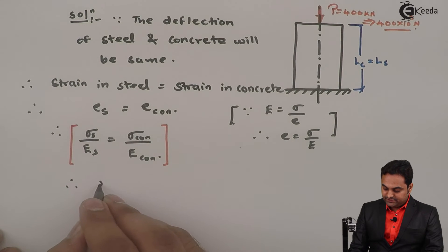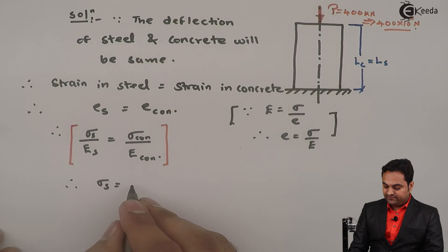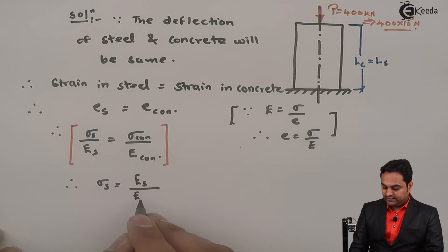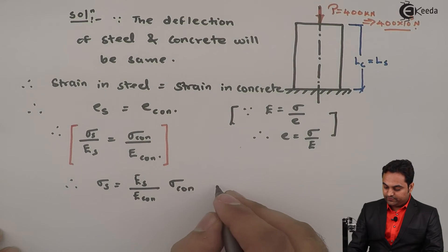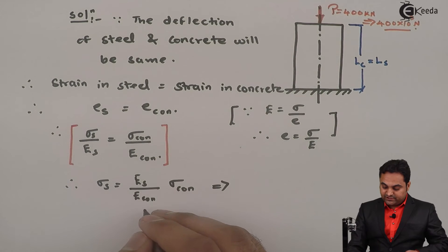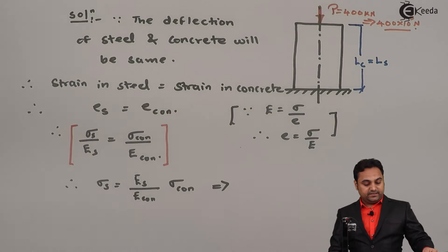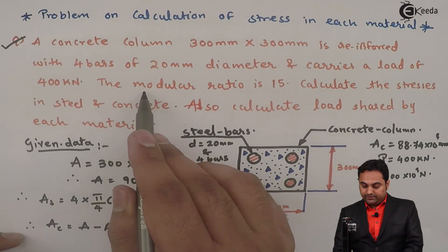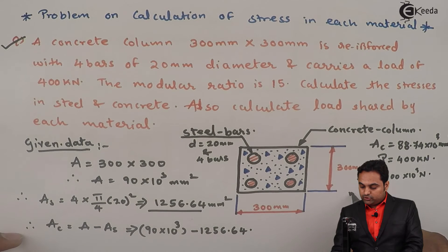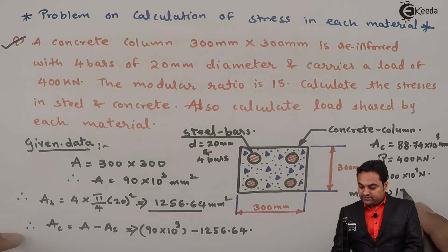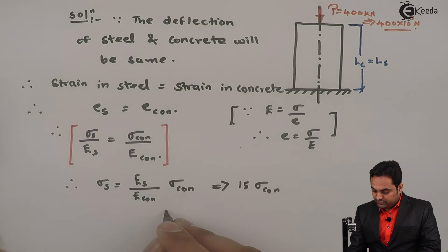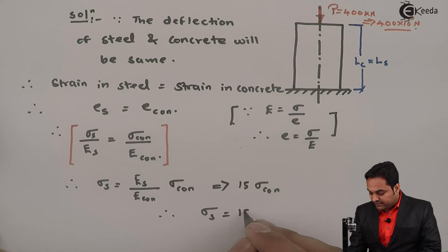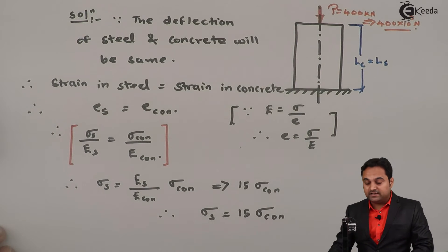Therefore, stress in steel / Young's modulus of steel = stress in concrete / Young's modulus of concrete. Rearranging, σ_s = (E_s / E_c) × σ_c. The ratio E_s / E_c is the modular ratio, given as m = 15. Therefore σ_s = 15 × σ_c. This will be equation number one.